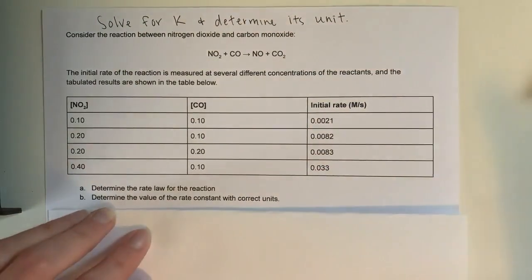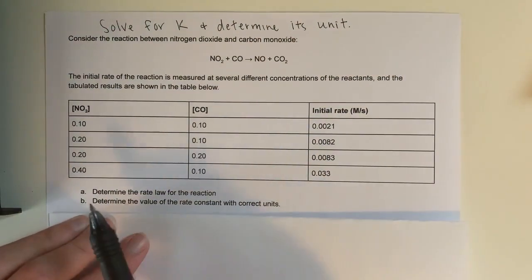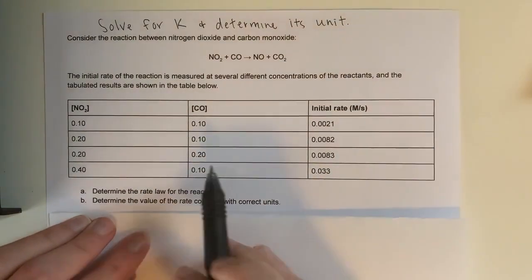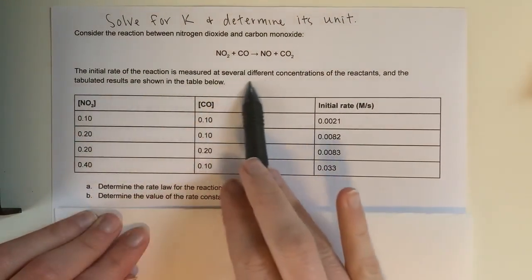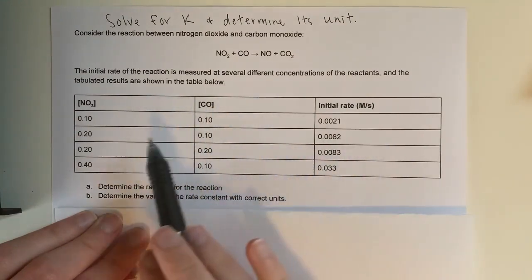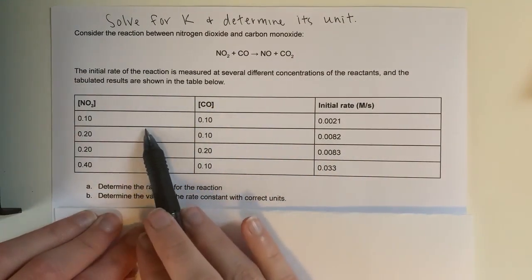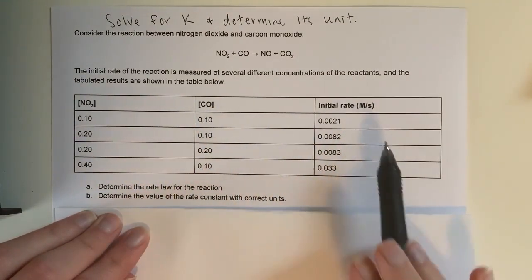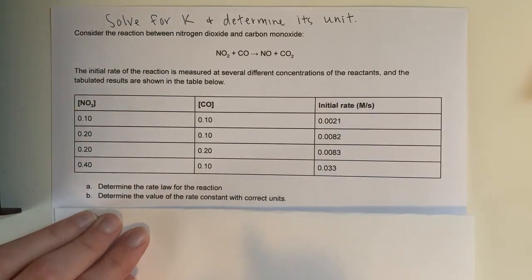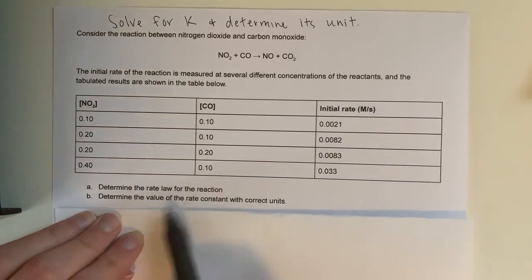The first example we'll look at is consider the reaction between nitrogen dioxide and carbon monoxide. It said the initial rate of the reaction is measured at several different concentrations of NO2 and CO, and the rate was measured. So the first thing that we have to do is we have to figure out the rate law.